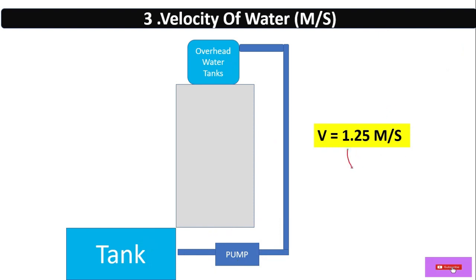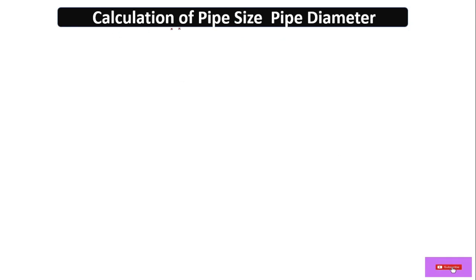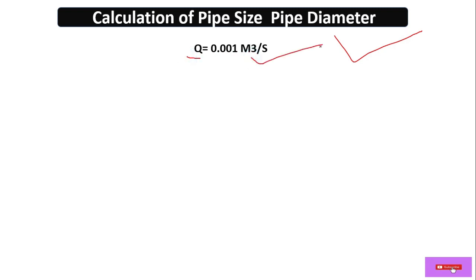In this case, we take V = 1.25 meters per second, which is the pressure velocity. Now in Step 4, we calculate the pipe size. We already have Q = 0.001 m³/s and V = 1.25 m/s.